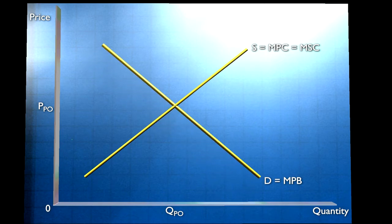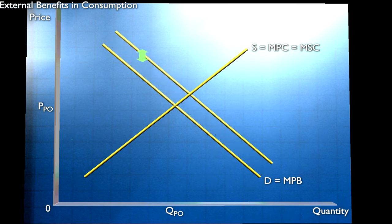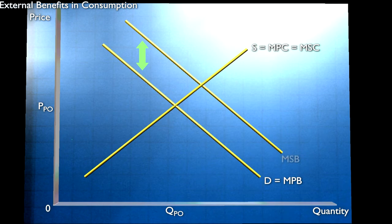Finally, we have the external benefits in consumption. So again, we have our supply curve reflecting marginal private and marginal social costs. But this time, the marginal social benefit exceeds the marginal private benefit. The difference between the two being the marginal external benefit conferred on society.